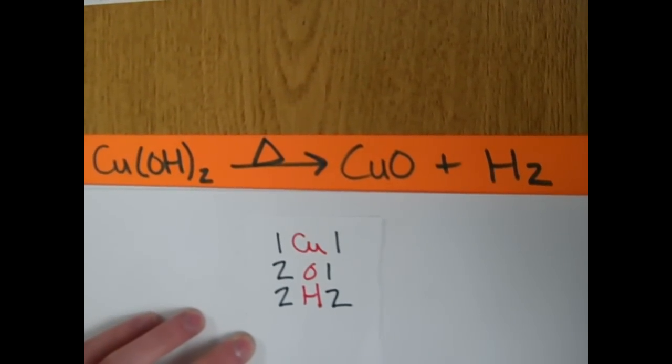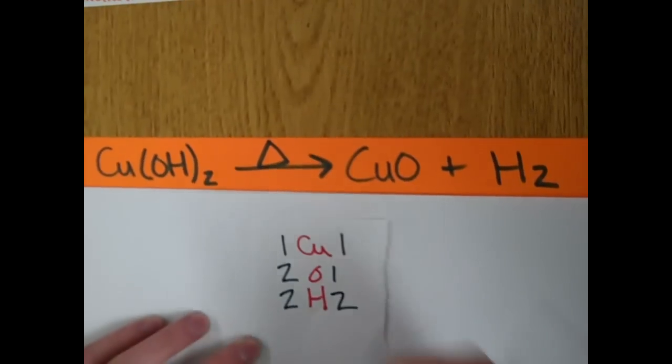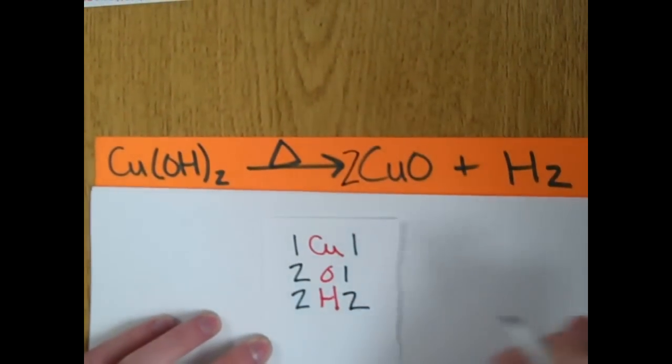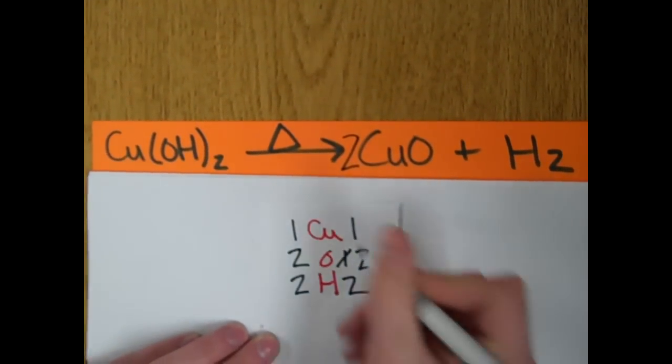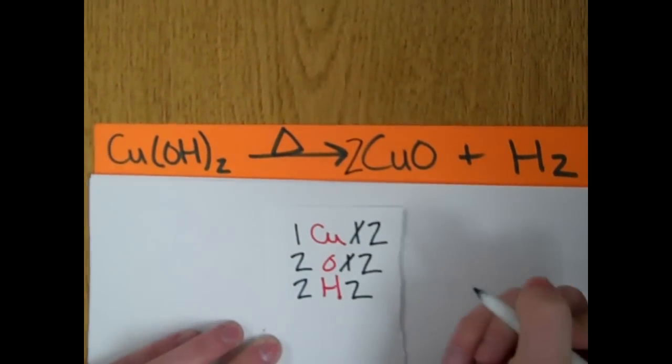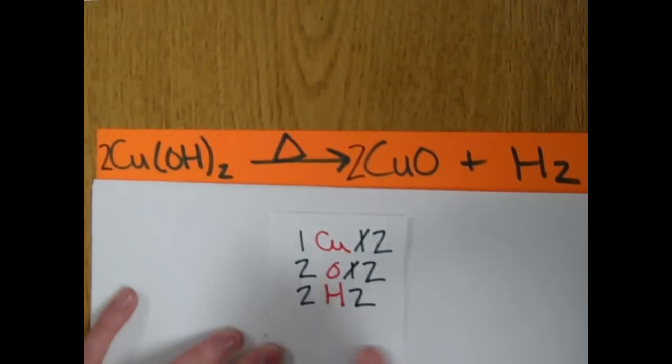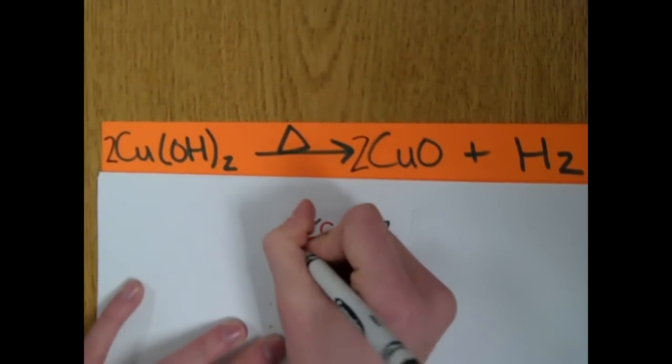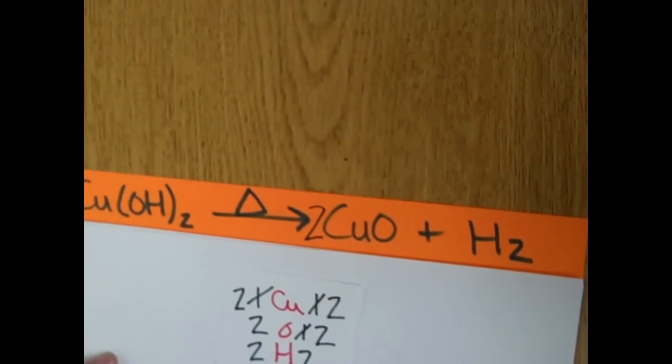To balance the oxygens on this side, because there's one on this side and two on the other, we're going to need to put a two in front of this. So, that changes it to two oxygens, except then there's two coppers. So, on this side, if we put a two in front of there, there are now two coppers. I think I balanced that one.